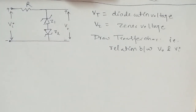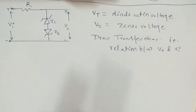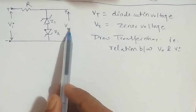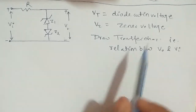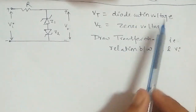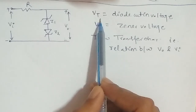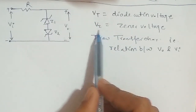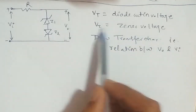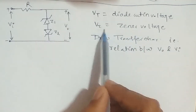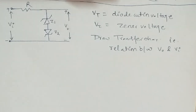Transfer characteristics is used to establish a relation between V0 (output) and input. Here, what we have given is that in forward bias, the cut-in voltage is VT; in reverse bias breakdown region, the diode voltage is VZ. We have to draw the transfer characteristics.